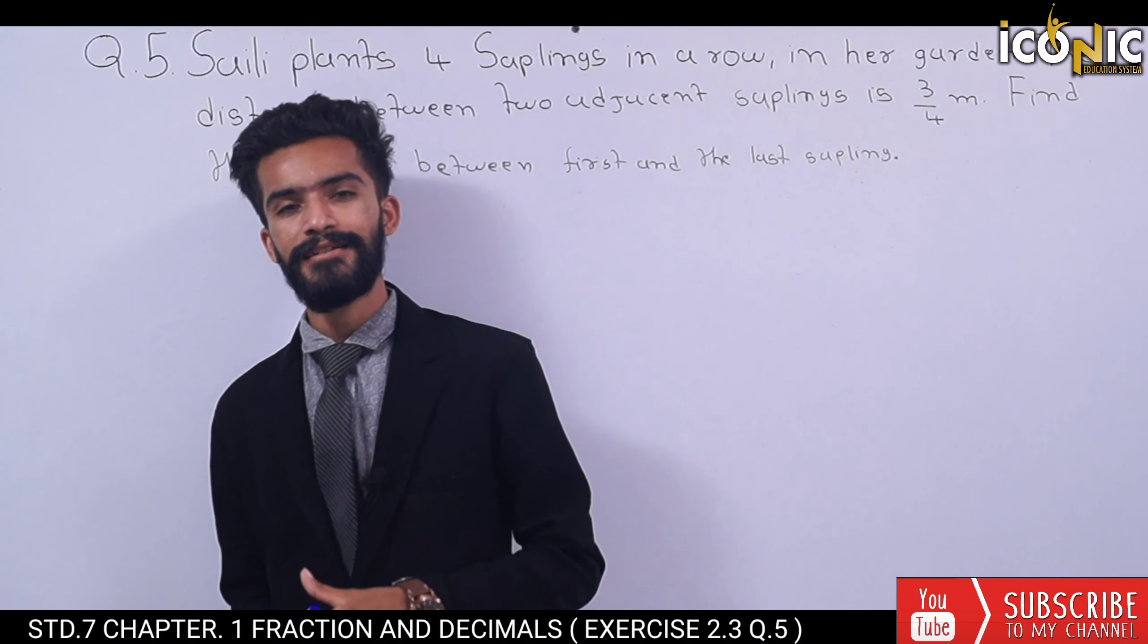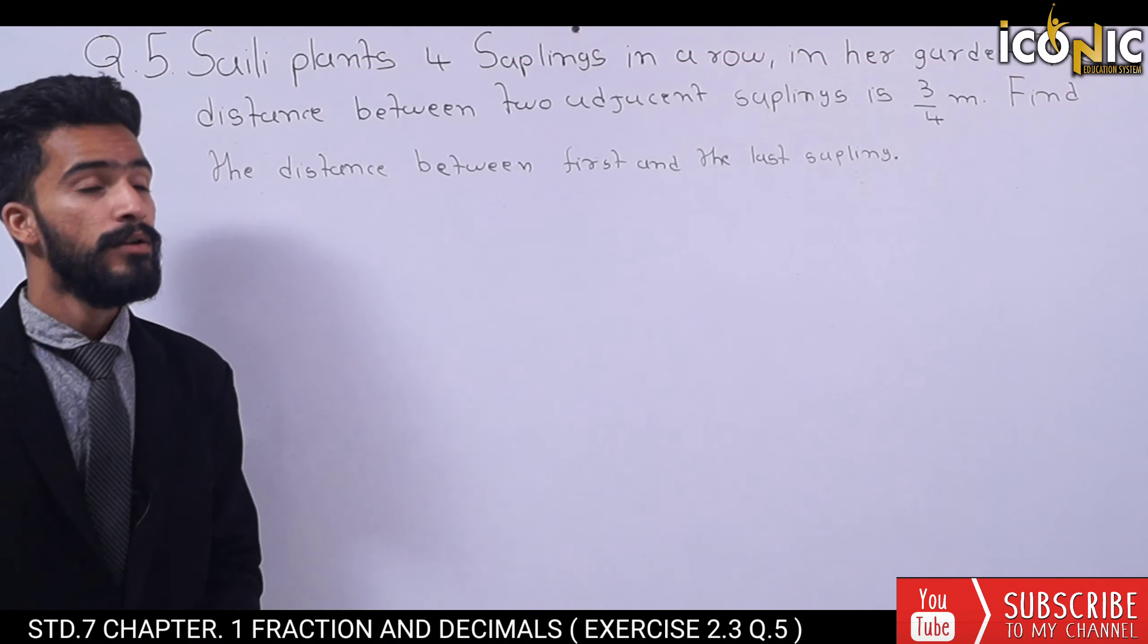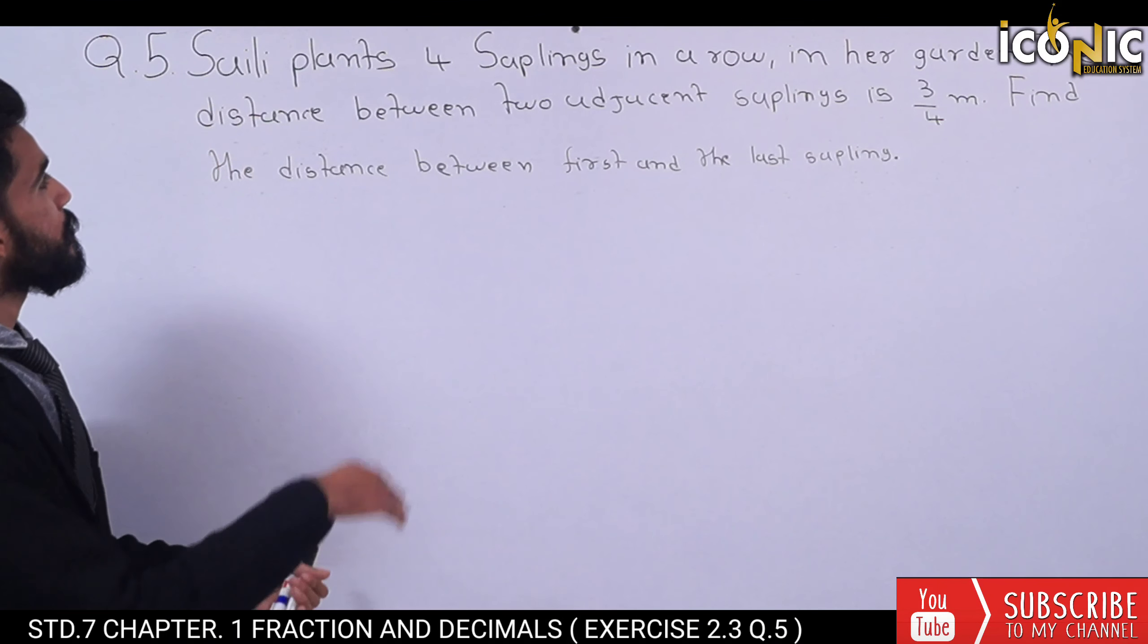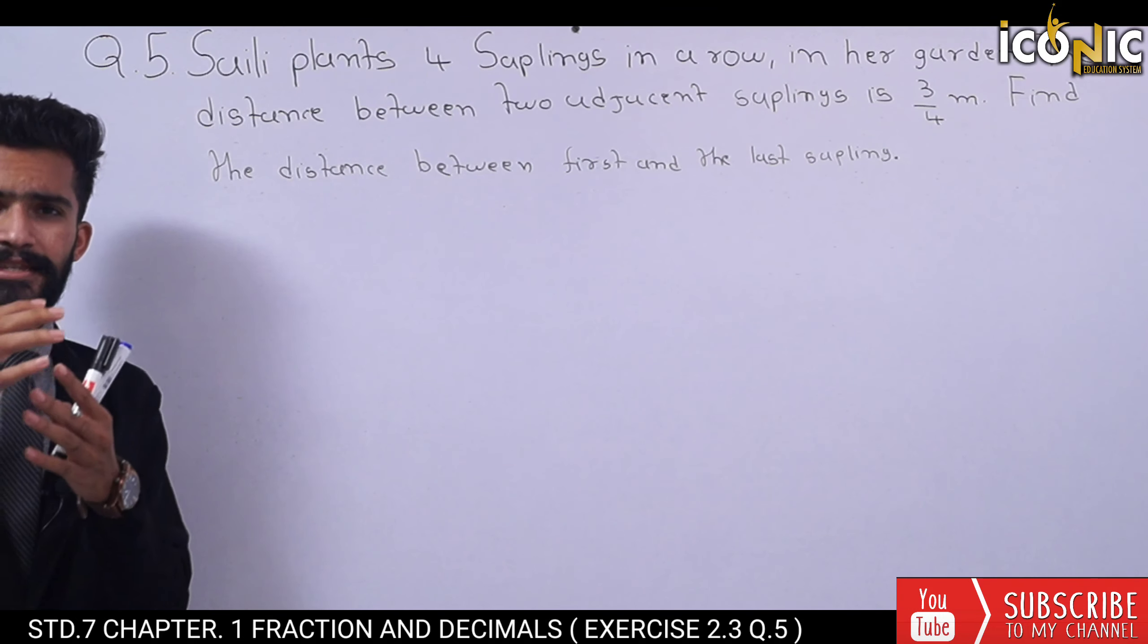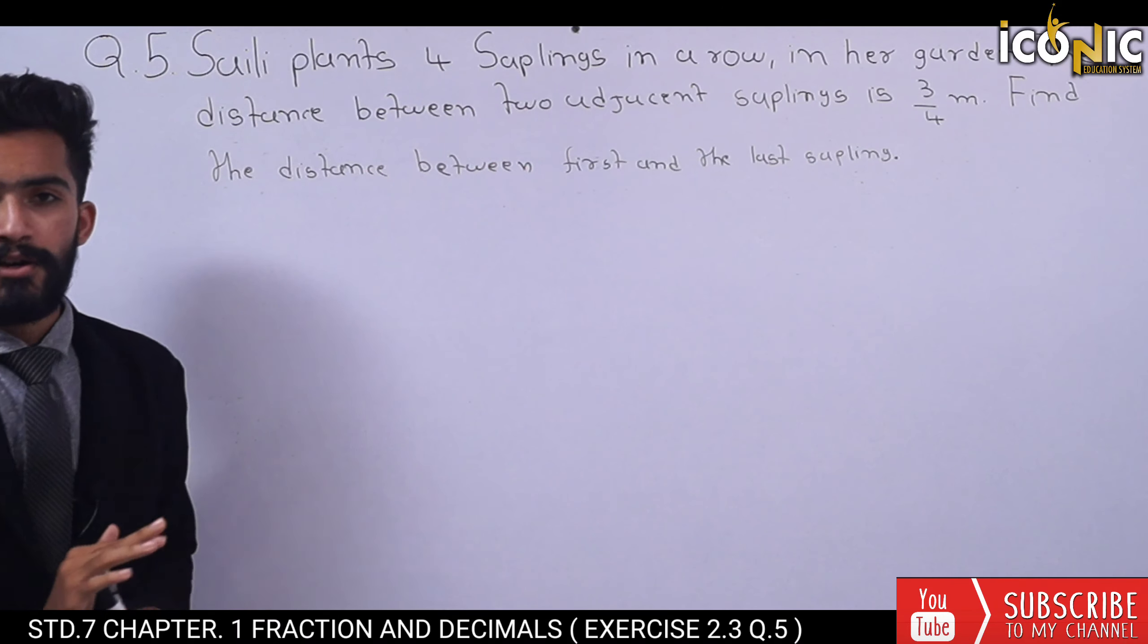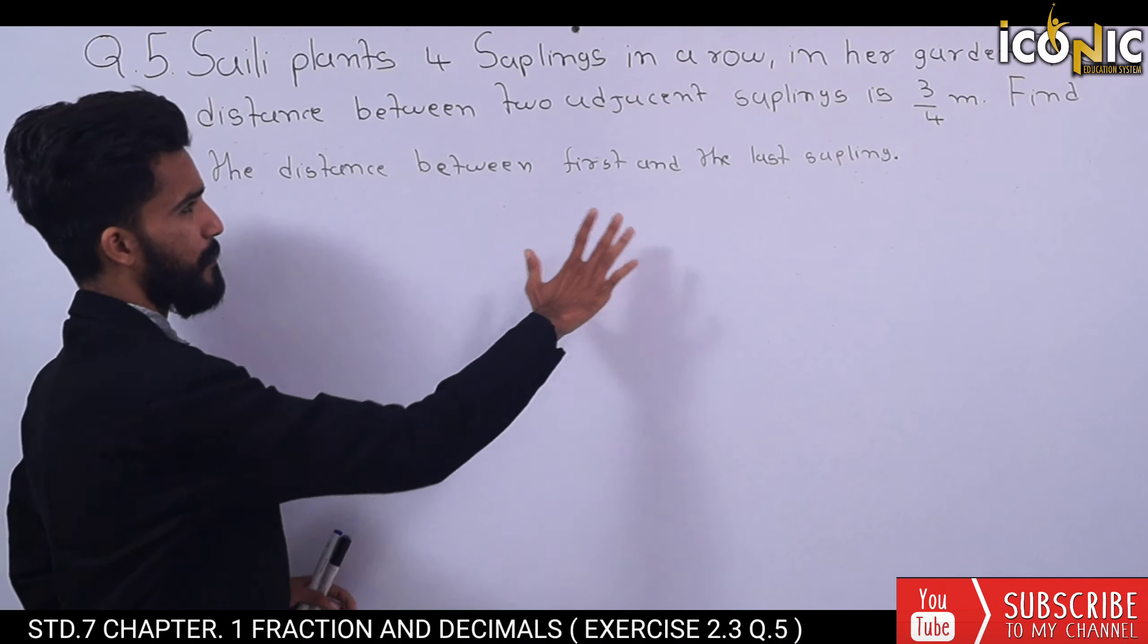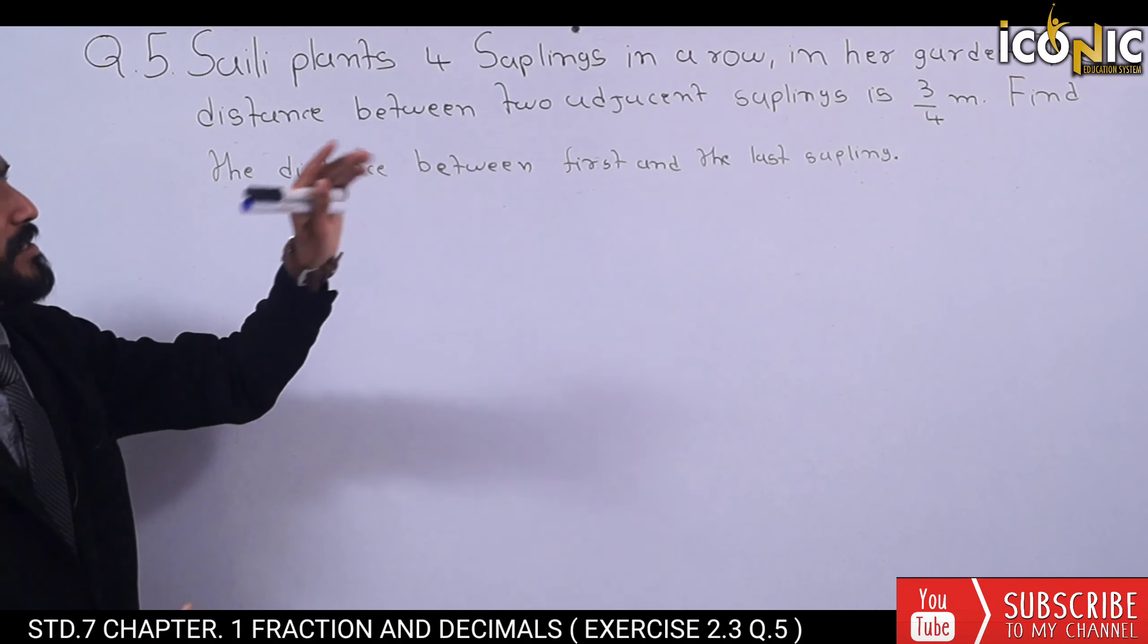don't forget to subscribe to the channel. So let's start Question Number 5. In this question, Saline plants 4 saplings in a row in her garden. The distance between two adjacent saplings